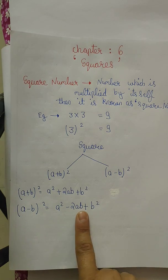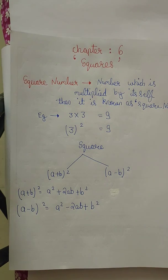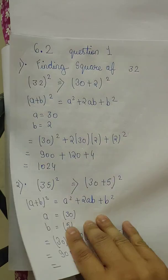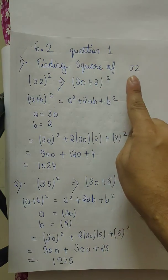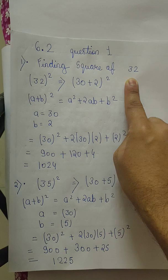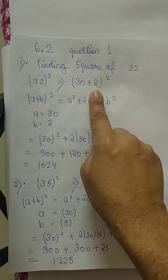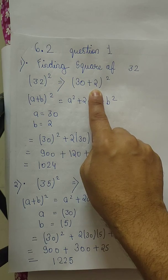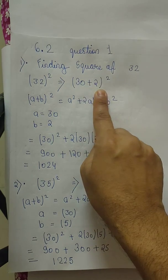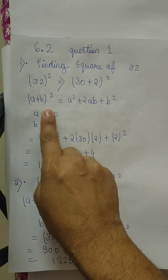Hope you already have seen the formulas. So let's start exercise 6.2, question number one. Finding the square of 32. We have to find out 32 ka square. So we will break 32 into 30 and 2 format, because it can be easily broken into two numbers: (30+2)².